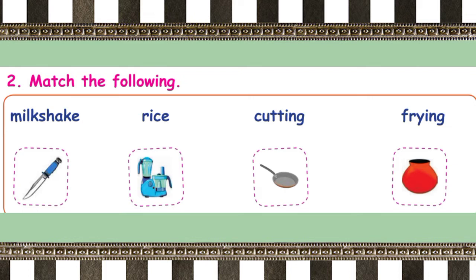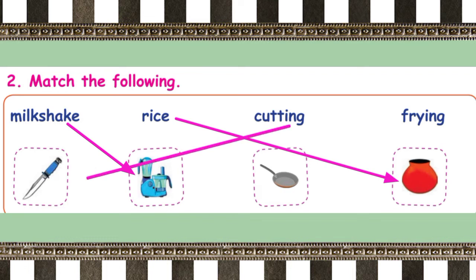Next, match the following. First, milkshake. How do we make milkshake? Yes, with a mixer. Match it. Next, rice. How do we make rice? With a pot. Yes, match it. Next, cutting. With which thing do we use to slice vegetables? Yes, knife. Next, frying. We use a pan for frying. Match it.